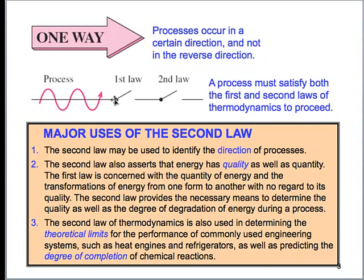So in order for a process to exist, it has to satisfy two things: one, energy has to be conserved, and two, it has to go in a certain direction. We can't expect it to behave opposed to either one of these laws.